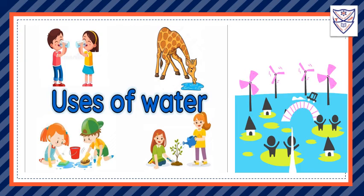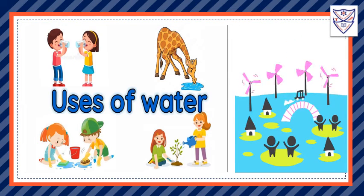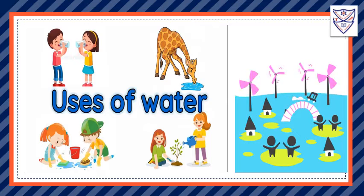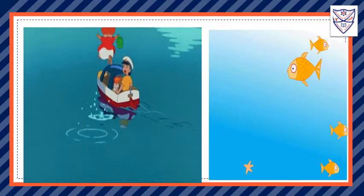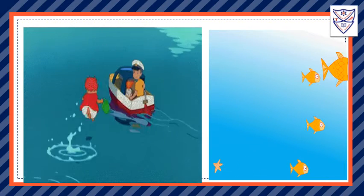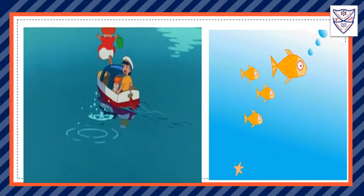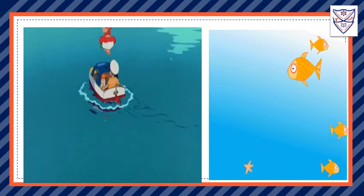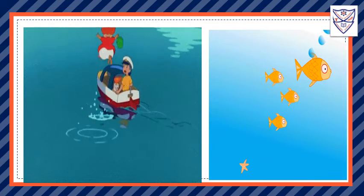Water is used for several processes such as drinking, washing, bathing, cultivation of crops, manufacturing things in industries, etc. Waterways are one of the oldest and cheapest forms of transport. Fish and other marine life provide us with food. Currents found in oceans influence the climate of coastal regions and islands.